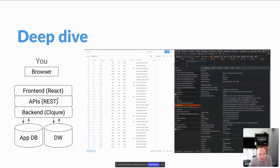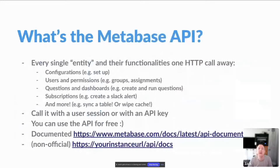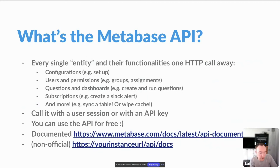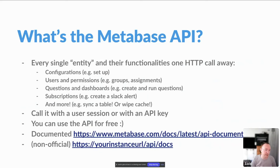So what is the API? It's absolutely every single entity and their functionalities. Metabase exposes their entities and the functionalities of those entities — you can call from your browser, console, terminal, PowerShell, or absolutely anywhere, including Python code. The coolest thing about Metabase is that everything is an API. You can do whatever you want with the product — you can configure Metabase programmatically, set it up, and once it's ready, create an admin, create a database, connect to it — everything that is a configuration can be done via the API.